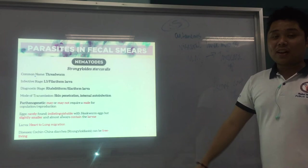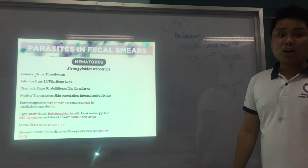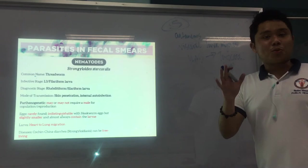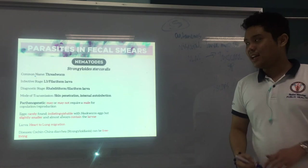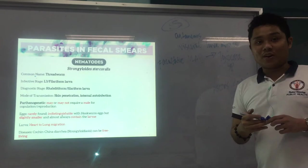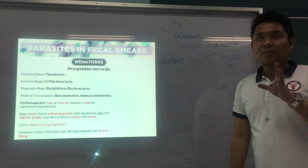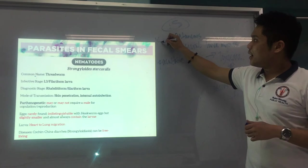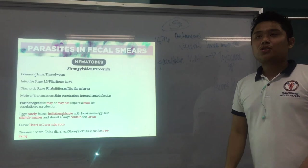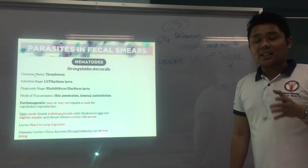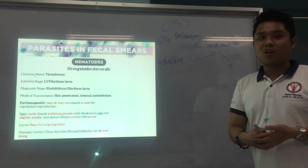The diseases include Cochin-China diarrhea or strongyloidiasis. It can also be free-living — Strongyloides is a facultative parasite, meaning it can exist with or without a host. Cochin-China diarrhea was named because in the 1870s, specifically 1876, a disease was reported in the Indochina region — Vietnam and surrounding areas — caused by diarrhea, later found to be caused by strongyloidiasis.